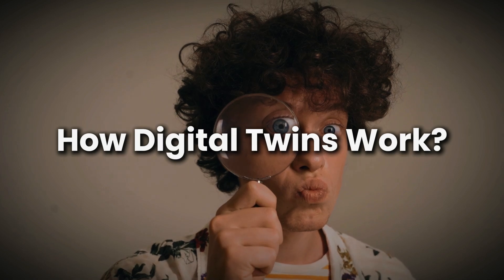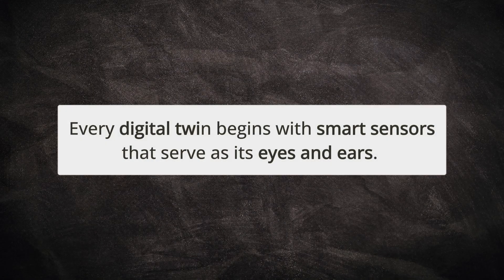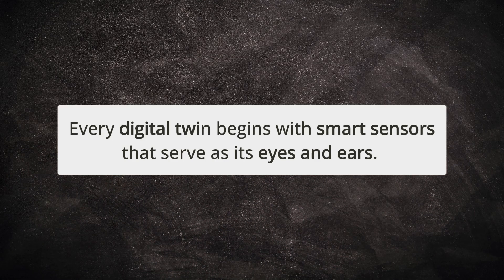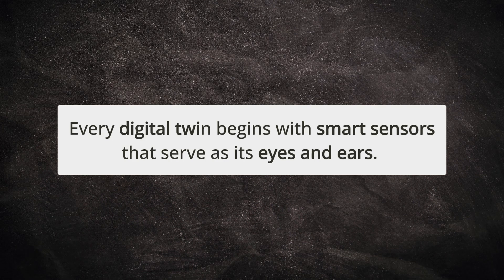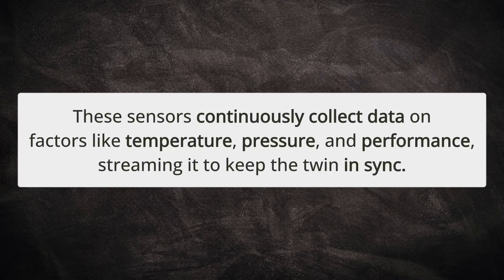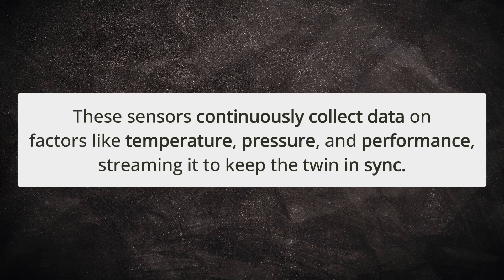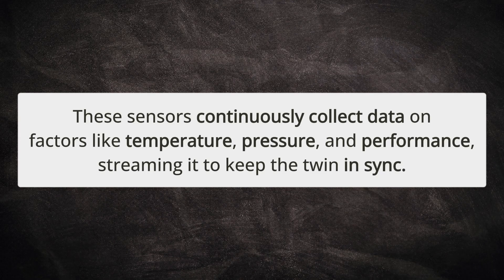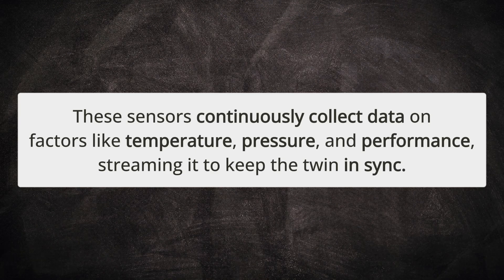Every digital twin begins with smart sensors, which act as the eyes and ears of the system. These sensors collect data on various factors like temperature, pressure, and performance, streaming continuously to keep the digital twin in sync.